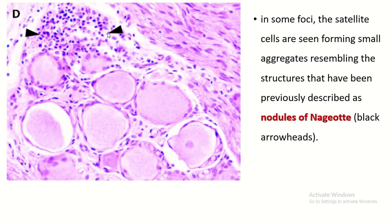This is known as the nodule of Nageotte. It is formed by the aggregation of satellite cells, sometimes found in the cross-sections of the dorsal root ganglia.